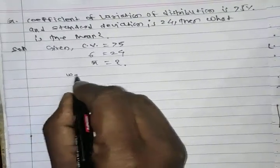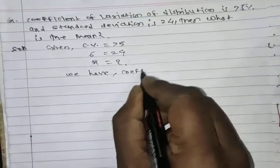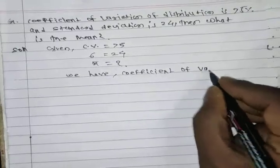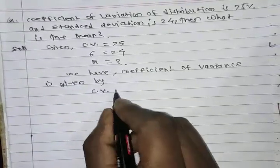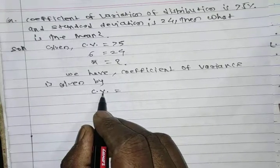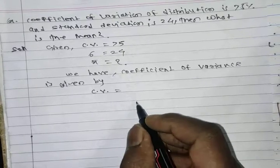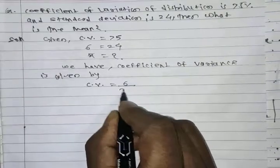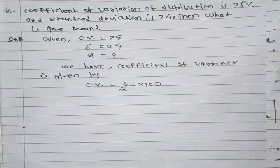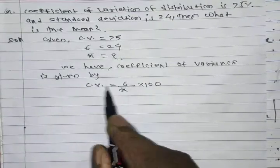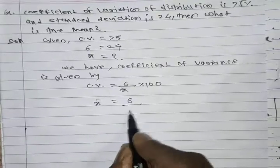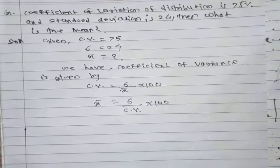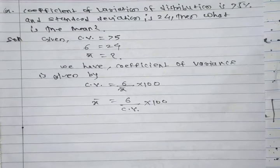The coefficient of variation is given by: C.V. = sigma upon x-bar, multiplied by 100. What is given: sigma is given; we need to find x-bar. So rearranging: x-bar equals sigma upon C.V., multiplied by 100. That is, mean equals standard deviation divided by coefficient of variance, multiplied by 100.